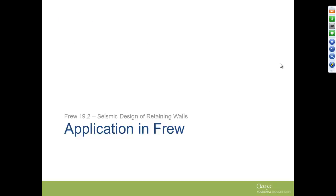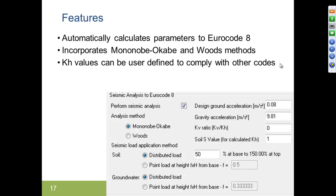Now going to the application — what has been added to FRU 19.2? It automatically calculates the parameters to Eurocode 8. It incorporates both methods — the MO method and the Woods method — with a tick box to choose between them. Inputting these values calculates parameters automatically, including the horizontal acceleration kh. They can also be user-defined to comply with other codes.